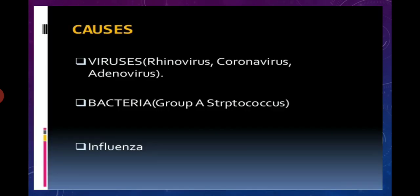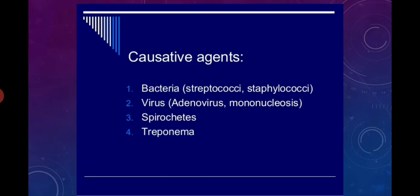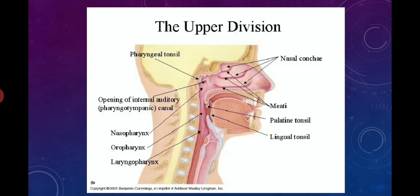Causative agents may include viruses such as rhinovirus, coronavirus, or adenovirus, and bacteria such as group A streptococcus or influenza. Other positive agents for upper respiratory tract infection include streptococci, staphylococci, adenovirus, spirochetes, and Treponema.